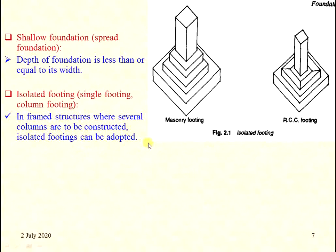In the frame structure where several columns are constructed, isolated footings can be adopted. We see two types — masonry footing, made of either stone or brick, and RCC footing, which stands for Reinforced Cement Concrete.